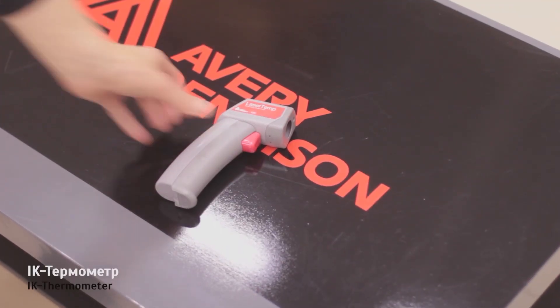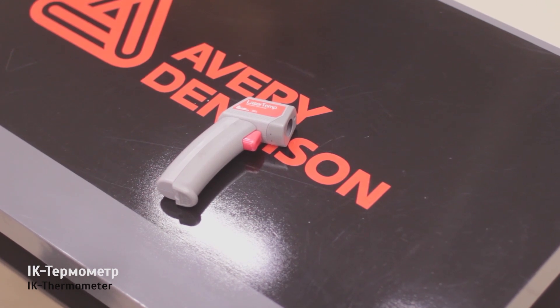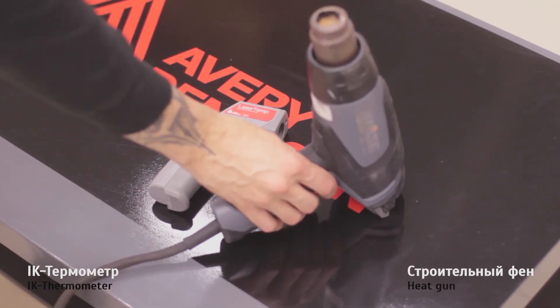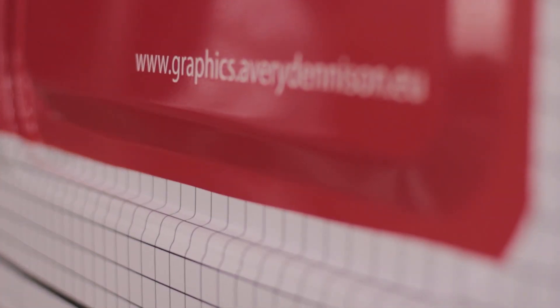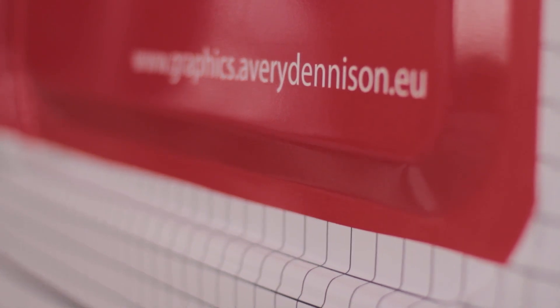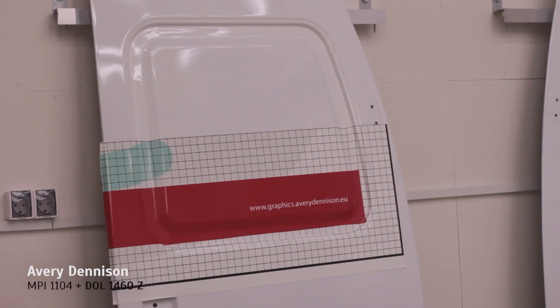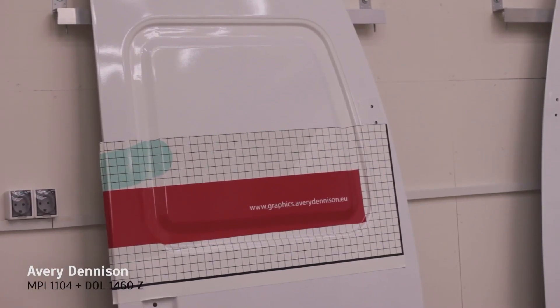For today's task we'll need two instruments, an IR thermometer and a heat gun. I'm using a Steinel heat gun. Please have a look at this corrugated panel from Gazelle. It has really deep channels and I already applied vinyl here, so I can show you how to post heat this area correctly. For these elements we used cast film MPI 1104 with dedicated cast laminate.